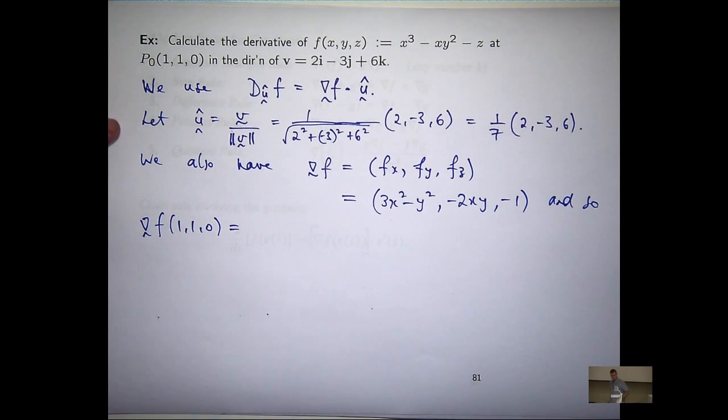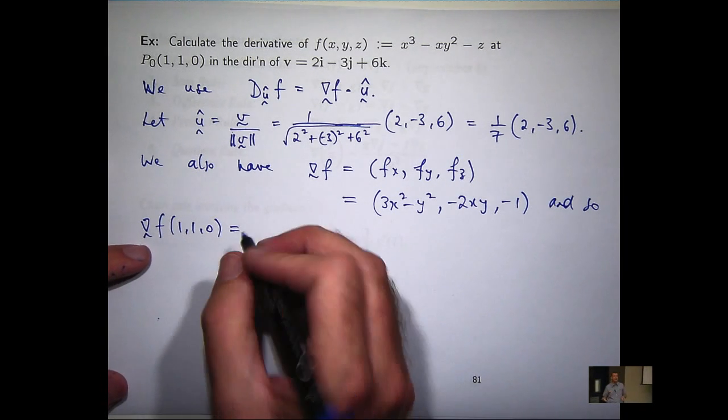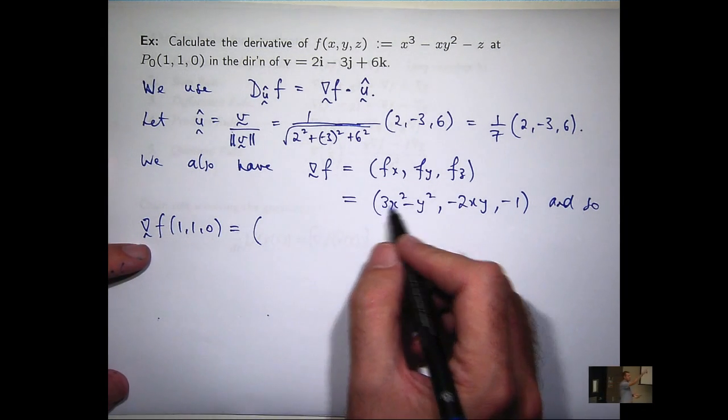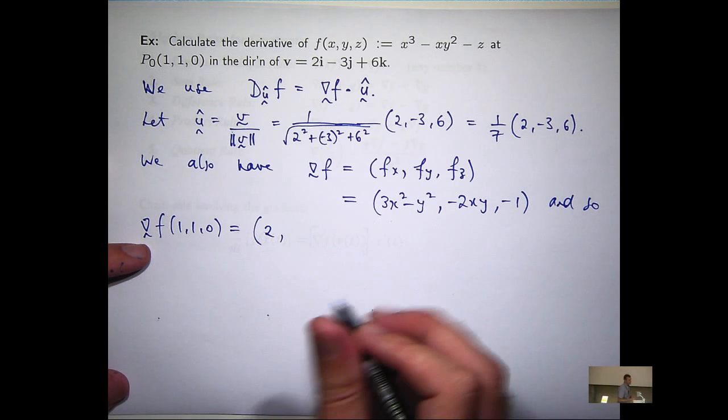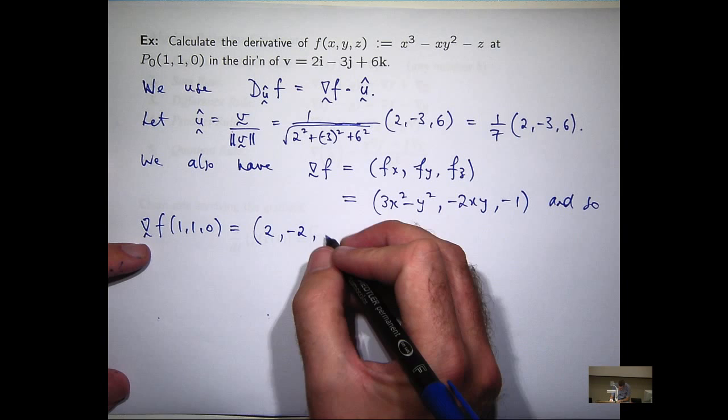So the gradient vector at our point of interest, just sub in. What are we going to get? We're going to get something like 3 minus 1, minus 1, minus 2, and minus 1.